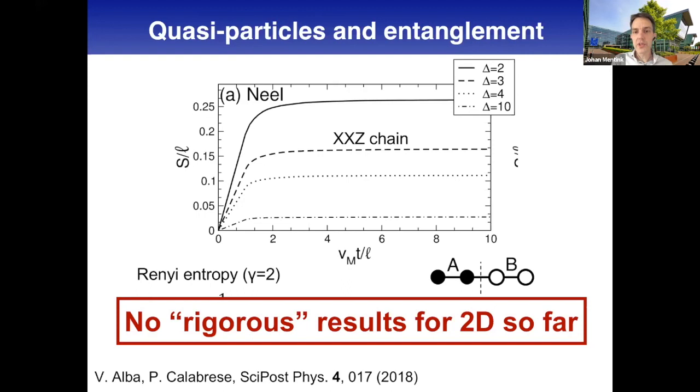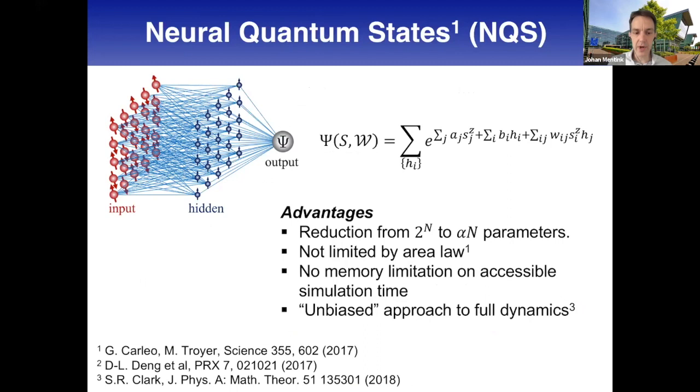This is where neural quantum states came in. This was pioneered by Giuseppe Carleo and Matthias Troyer. I have a very physicist approach to these neural quantum states - for me it's just a very smart variational wave function. As usual for variational wave functions, you have huge compression of your Hilbert space. You don't need the full Hilbert space but just a polynomial number, and for translation invariant systems it's just linear with the number of spins.